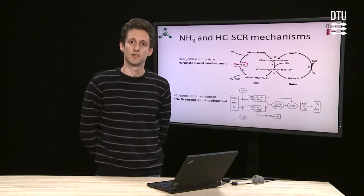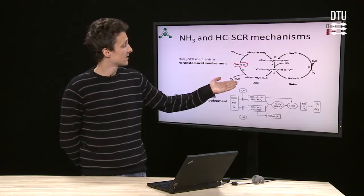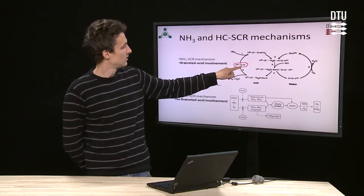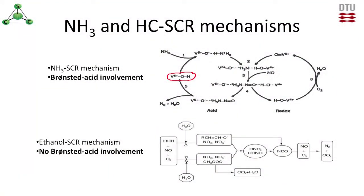This deactivation is caused by the involvement of Bronsted acids in the catalytic cycle of the ammonia SCR mechanism. As we can see here, the VOH groups are very essential to this process and they are blocked by potassium, which is present in the biomass in large amounts.